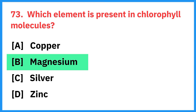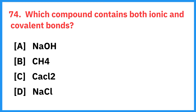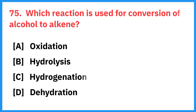Which element is present in the chlorophyll molecule? Right answer is magnesium. Which compound contains both ionic and covalent bonds? Right answer is sodium hydroxide.